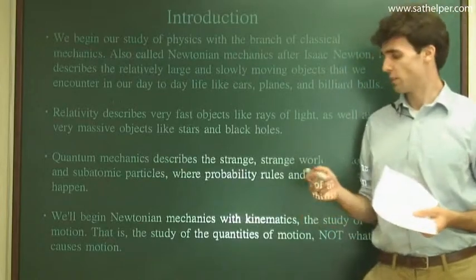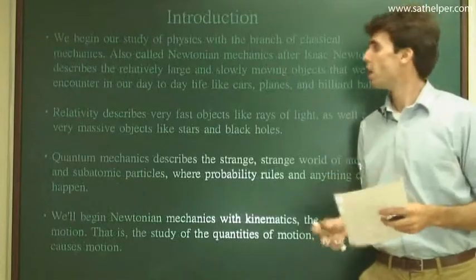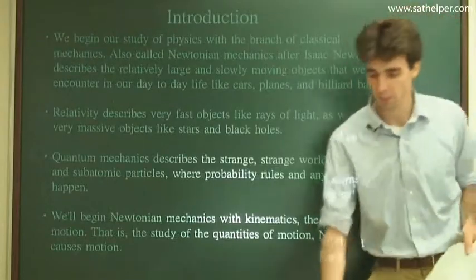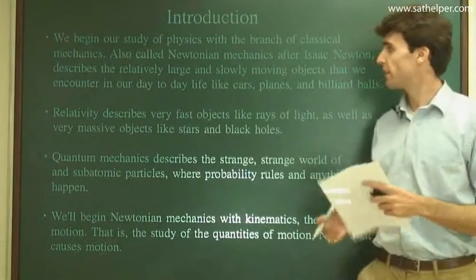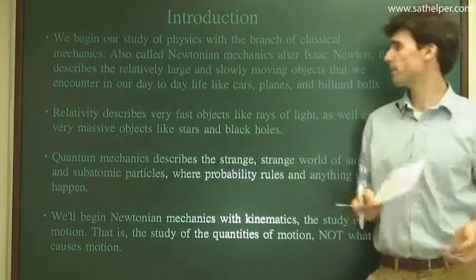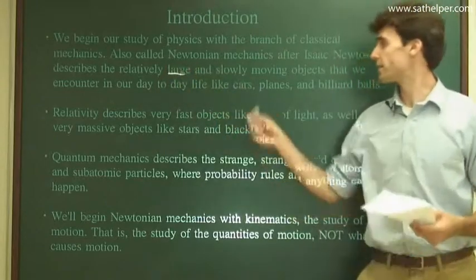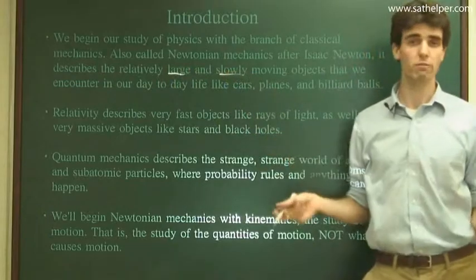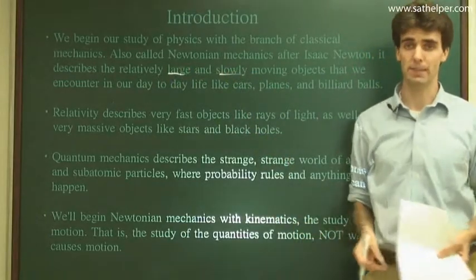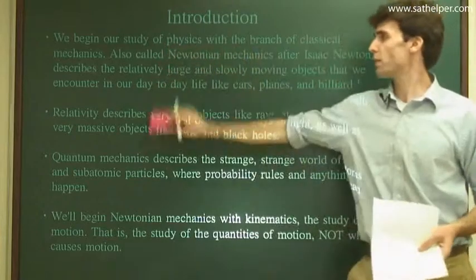We'll begin our study of physics with the branch called Classical Mechanics, also called Newtonian Mechanics after Isaac Newton, who invented it in the 1600s. It describes relatively large and slow-moving objects - large relative to atoms and slow relative to rays of light or super-fast alien spaceships.